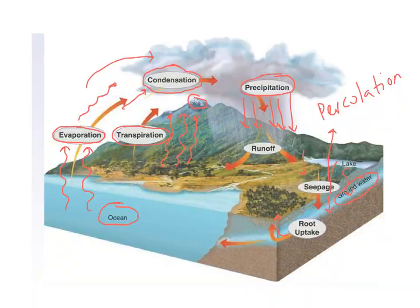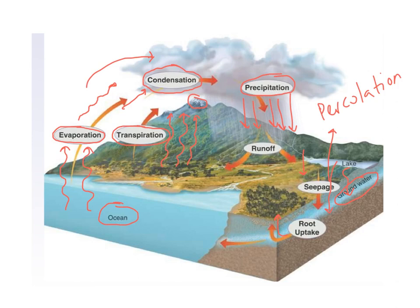So before we move any further, we're going to have a quick little review. Those of you that did the first Ed Puzzle, these words will seem familiar. For those of you that did not, it's time to stop falling behind — let's get caught up today. Biotic factors are the living components or living factors in an ecosystem which affect other living things.